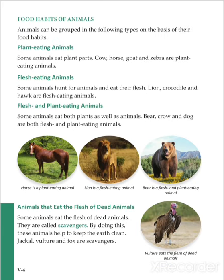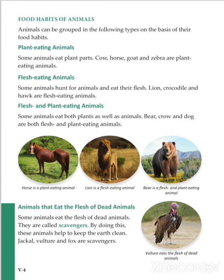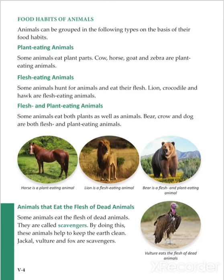The food habits of animals group them into the following types. Some animals eat only plants or grass — we call them plant-eating animals. Some animals eat only flesh — we call them flesh-eating animals. There are some animals who eat both plants and flesh — we call them flesh and plant-eating animals.